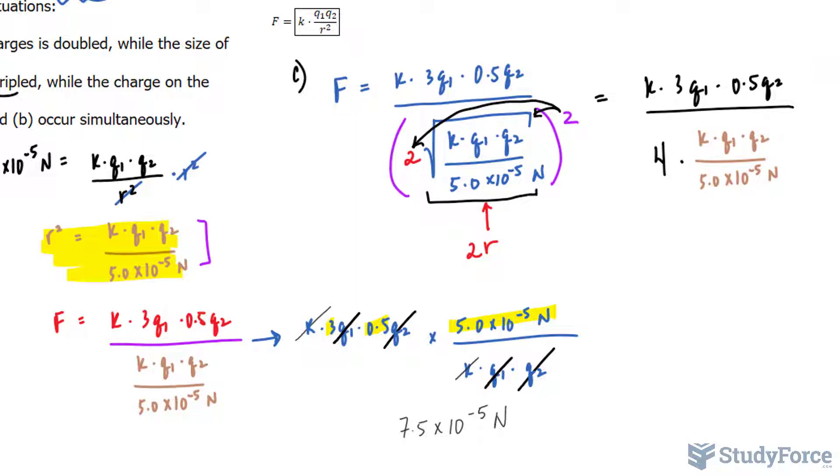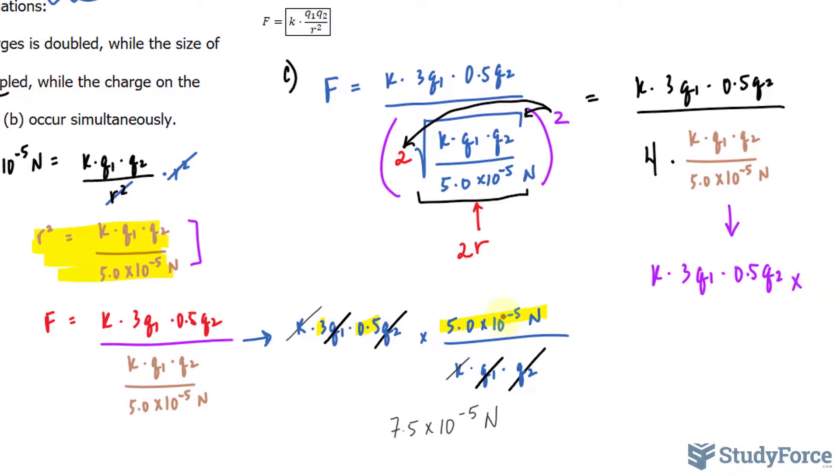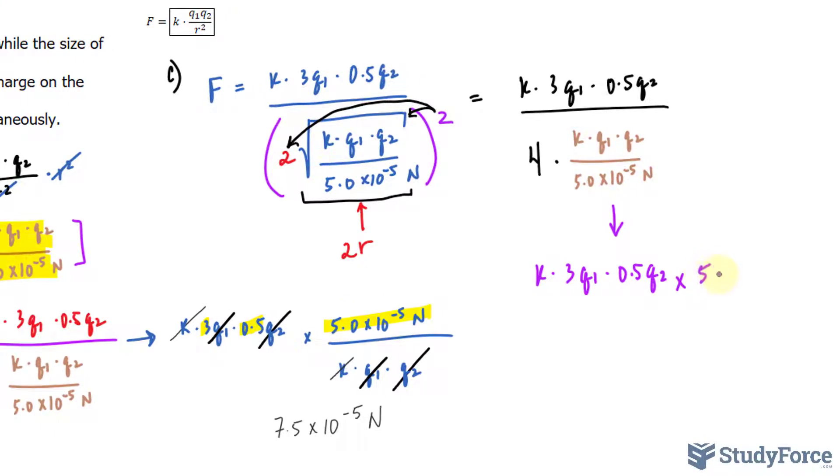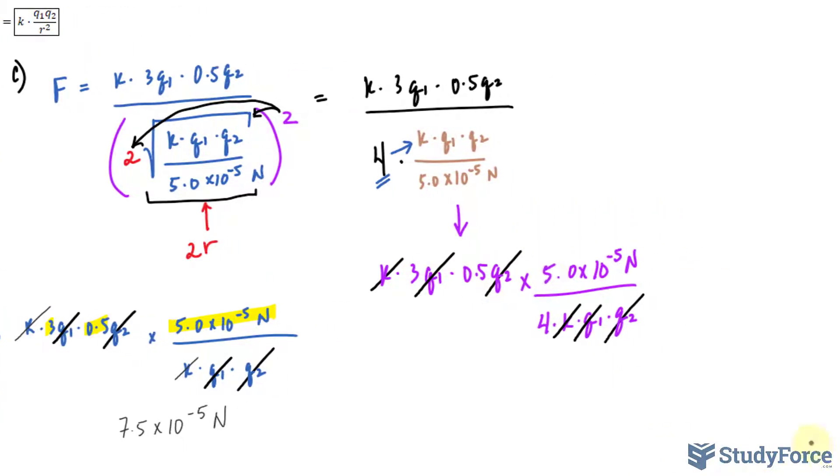Using the same algebraic technique as I applied in Part B, this expression ends up becoming the following. The numerator stays the way it is, and this gets multiplied to, just as we did in Part B, 5.0 times 10 to the power of negative 5 Newtons over 4 times K times Q sub 1 times Q sub 2. The 4 coming from this factor of 4, which gets multiplied there. Notice that this K and that K cancel, this Q and that Q cancel, Q, Q, and by multiplying the 3, 0.5 and 5.0 times 10 to the power of negative 5, then dividing by 4, you get your final answer.